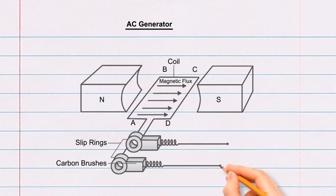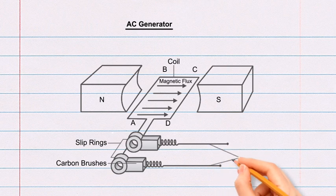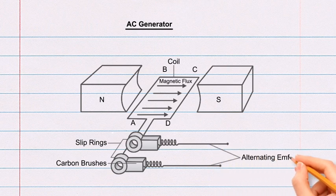From the right end of each spring, draw a horizontal line. The horizontal line represents the alternating EMF.